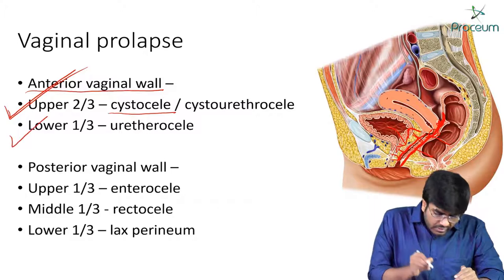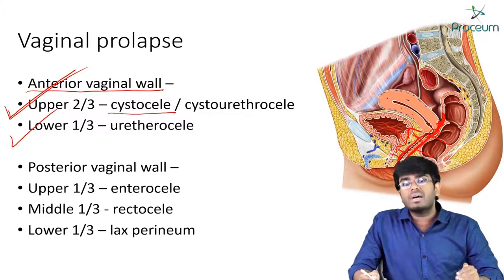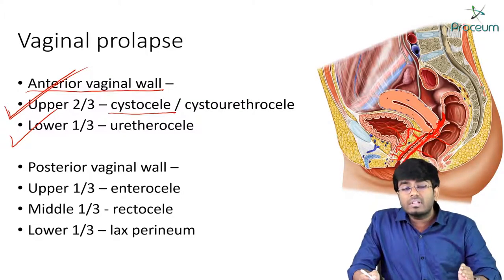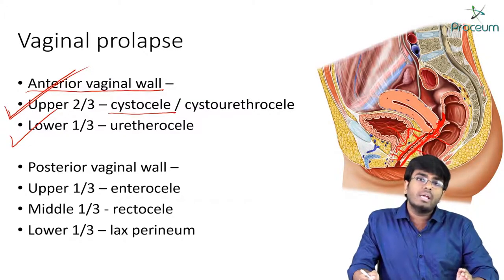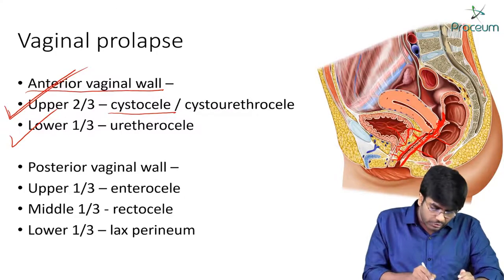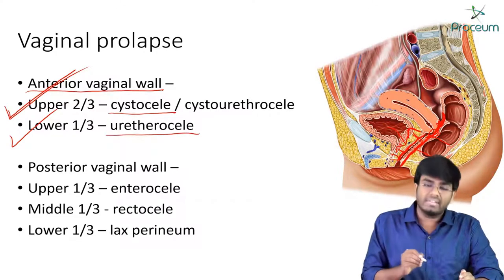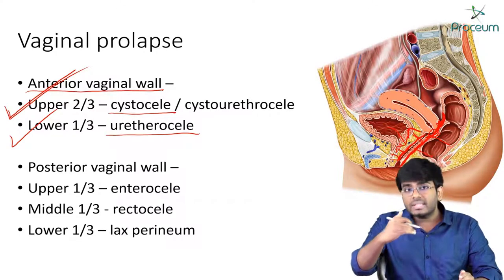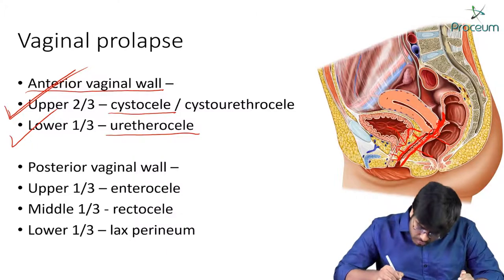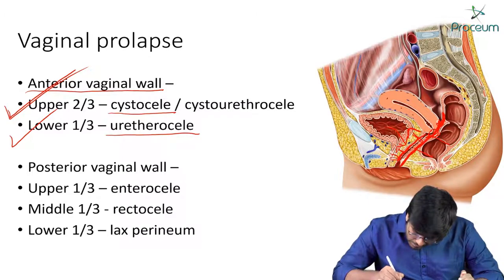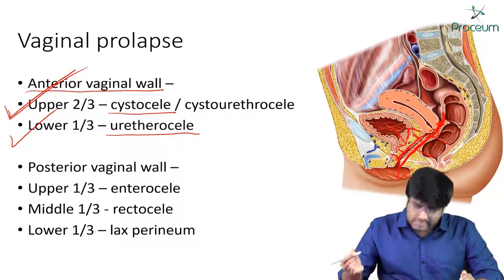And whenever there is prolapse of the lower one-third of the anterior vaginal wall, then you will have a urethrocele, because the urethra is falling down.